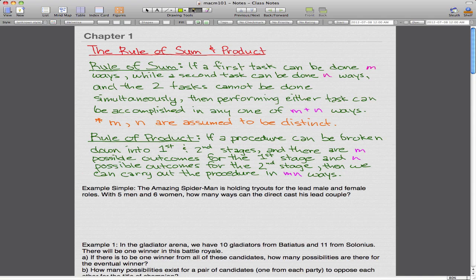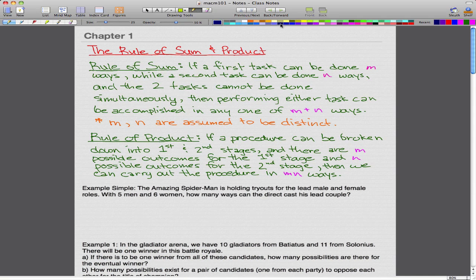Let's first go through the rule of sum and the product. I'm pretty sure you already know this. This is high school stuff. So the rule of sum: if a first task can be done m ways while a second task can be done n ways and the two tasks cannot be done simultaneously, then performing either task can be accomplished in any one of m plus n ways, and m and n are assumed to be distinct.